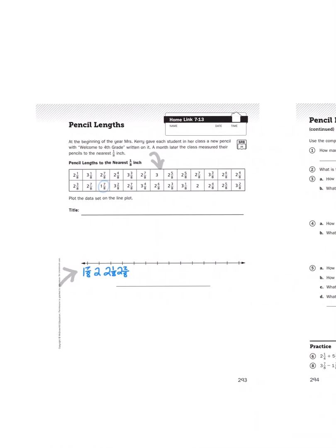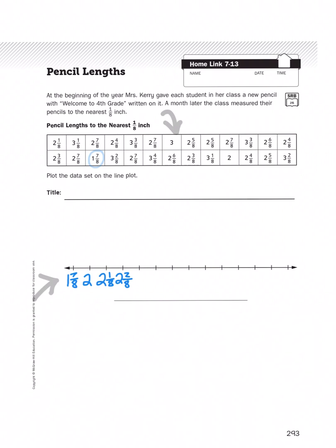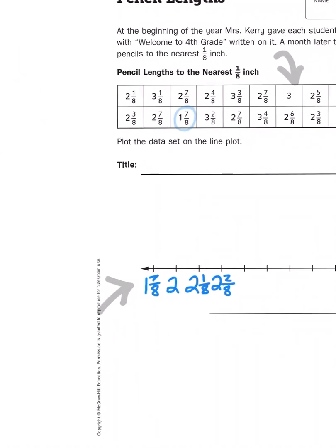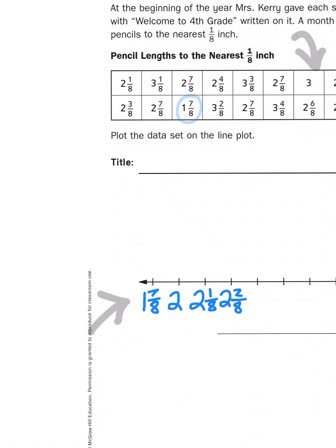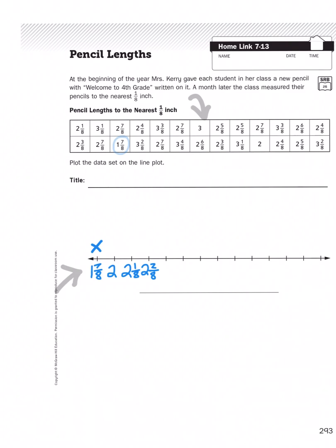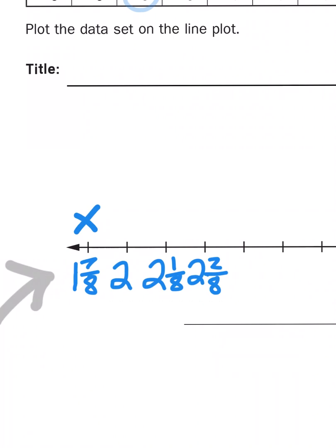Now once I fill out that number line, I'm going to start plotting out all of the times that I see a certain measurement. So for example, I have 1 and 7/8 as one of my measurements, so I would put an x right here. I also see that there is a 2 right there, so I would put an x over the 2. And every time I come across 1 7/8 or 2 or 2 and an 8 or any other measurement along this number line, I would put an x above that number corresponding with the number line.